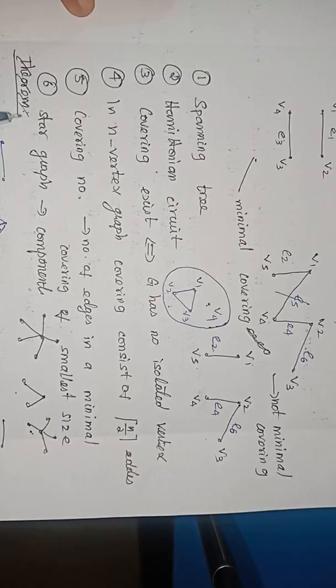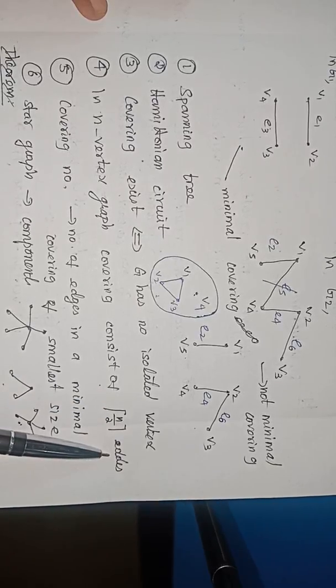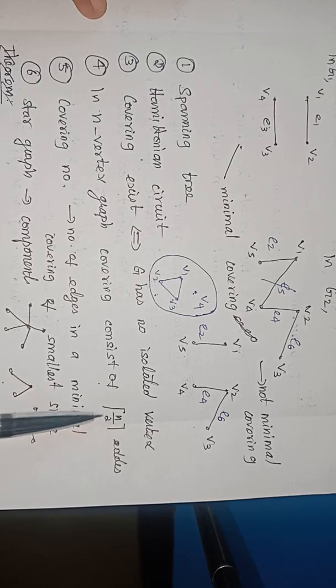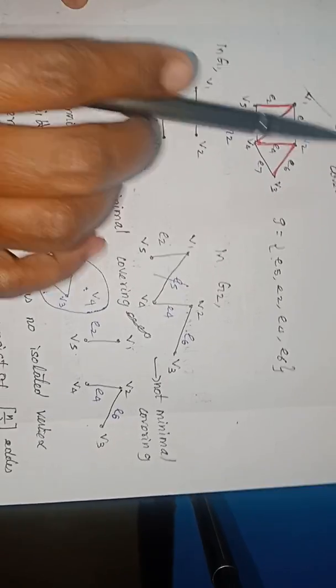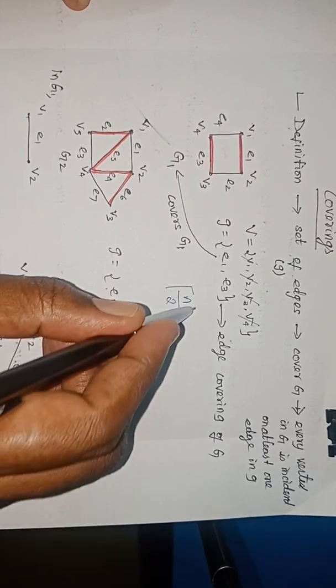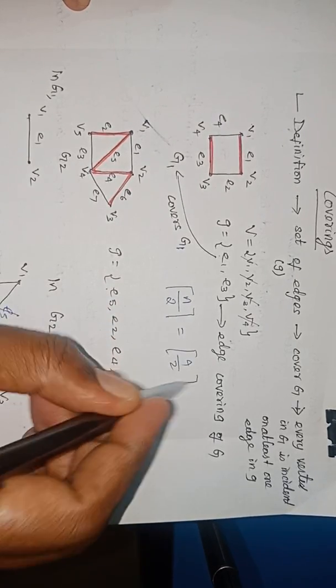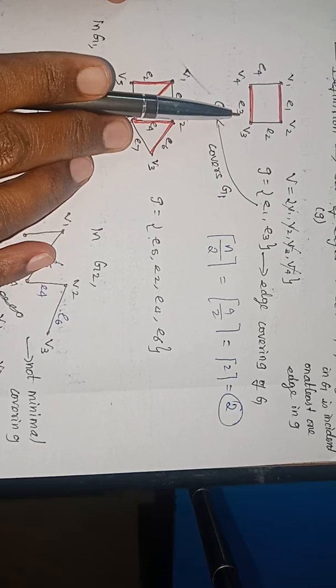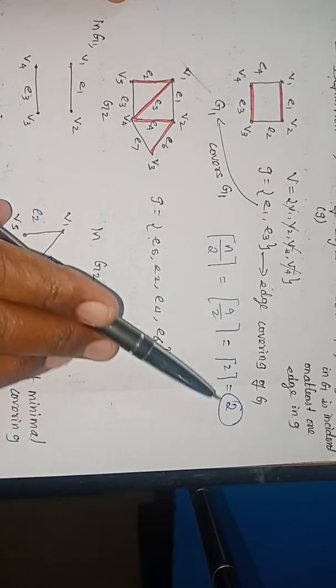Suppose a graph is having N vertices, then the covering consists of ceiling of N by 2 edges — the greatest integer of N by 2, that is rounding of N by 2. In this example, how many vertices are there? 4 vertices. So N is 4. N by 2 is 4 by 2 equals 2. So a minimal covering for this graph consists of 2 edges.